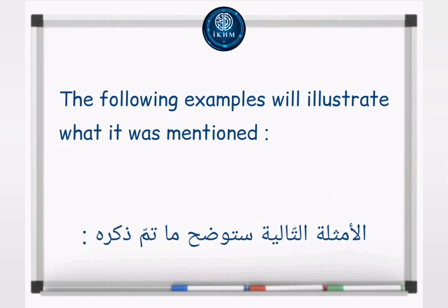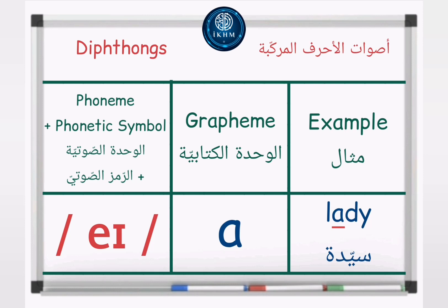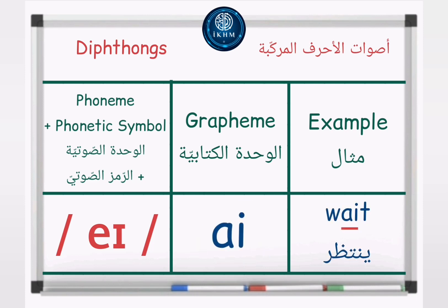The following examples will illustrate what was mentioned. Diphthong phoneme /eɪ/, phonetic symbol A. Grapheme: letter A. Example: Lady — /eɪ/ — Lady. Grapheme: A consonant E. Example: Fake — /eɪ/ — Fake. Grapheme: letters A, I. Example: Weight — /eɪ/ — Weight.